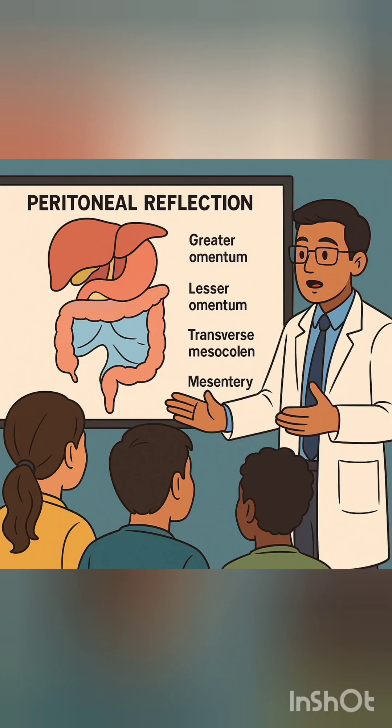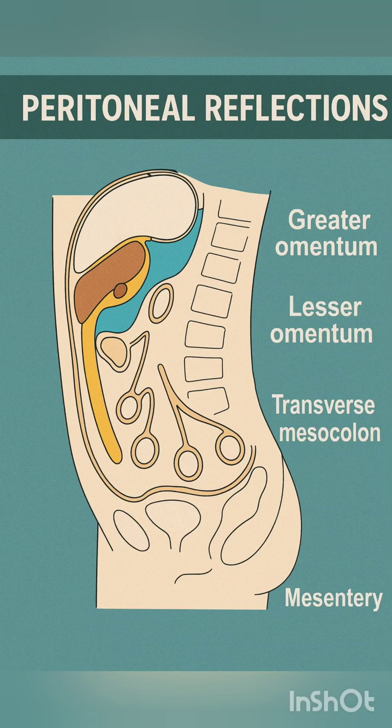Next we will talk about peritoneal reflections. These are the greater omentum, lesser omentum, transverse mesocolon, and mesentery.